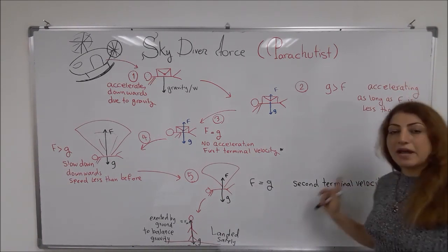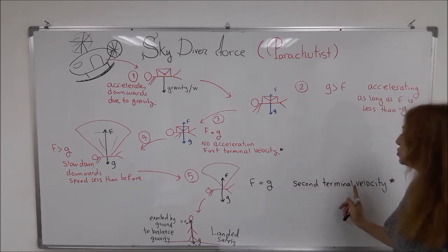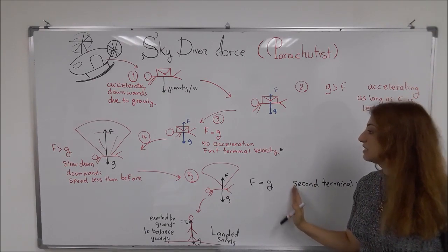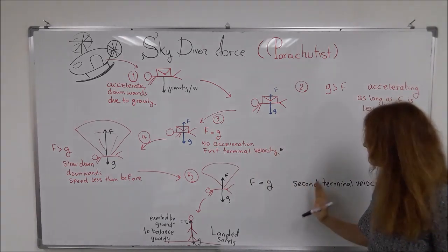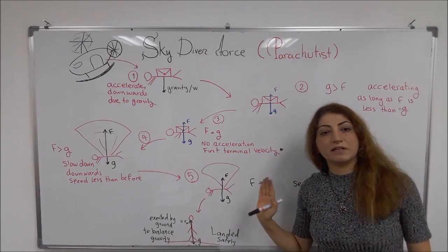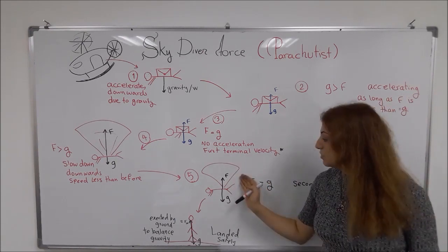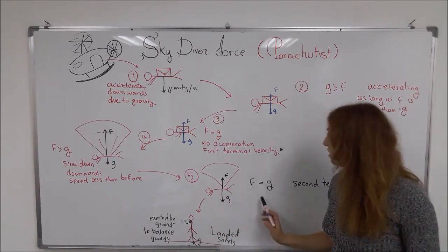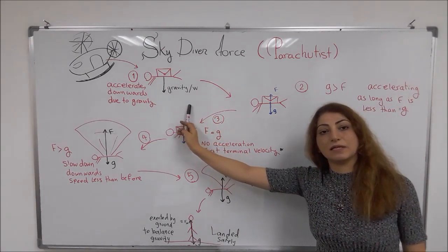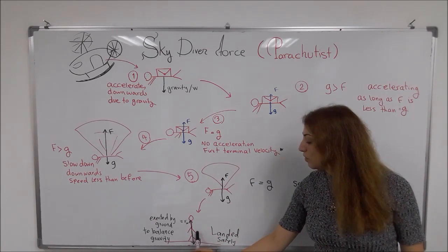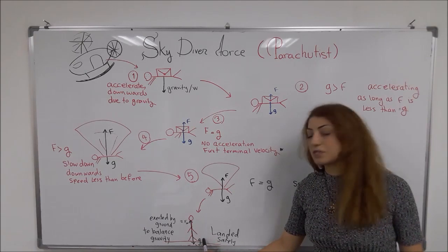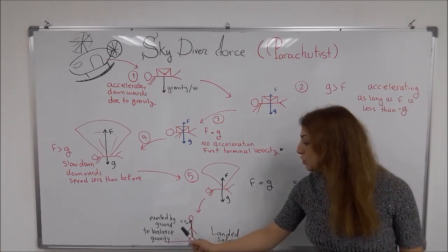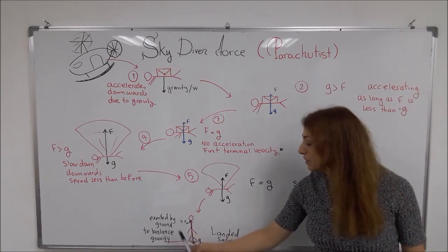The second terminal velocity is less than the first terminal velocity. The speed at this stage is less than all the other stages before. After that, the person safely lands. The speed has become much less than when he started. When he lands on the ground, there are two forces acting on the person: the force of gravity downward toward the center of the earth, and the force exerted by the ground on the person to balance gravity, which we call the normal force.